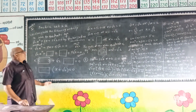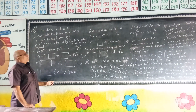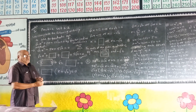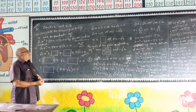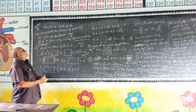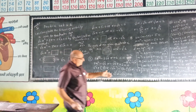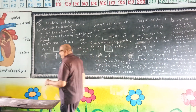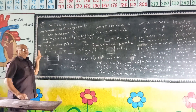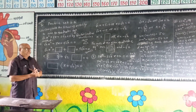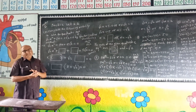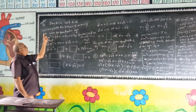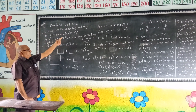Yesterday, Practice Set 2.2 solved examples 1 to 6, and today I solved examples 7 to 12. Example number 7 is Activity Question number 2 or 3. Compare the following activity to solve the particular equation.